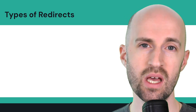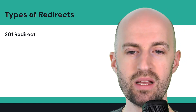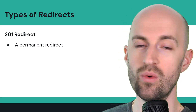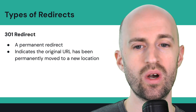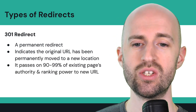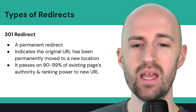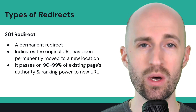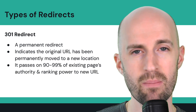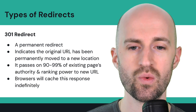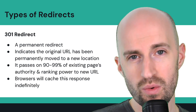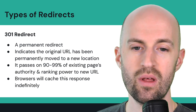Let's talk about some different types of redirects. We have the 301 redirect, which is known as a permanent redirect, used for permanent moves of URLs or pages. It indicates that the original URL has been permanently moved to a new location. Generally, the rule of thumb is it passes on between 90% to 99% of the existing page's authority and ranking power to the new URL. That's why we want to use 301 redirects in 99% of circumstances, because it's the most beneficial to SEO. Browsers will generally cache this response indefinitely, remembering that this is the new URL to return to.